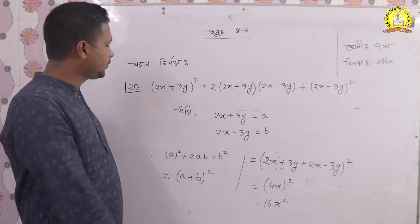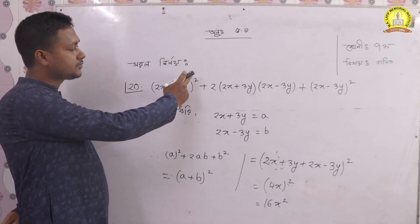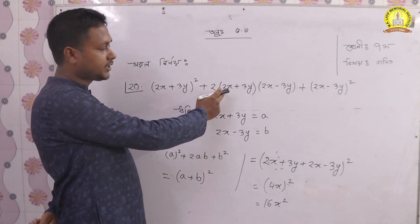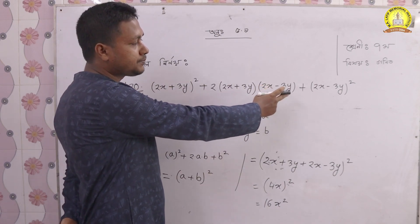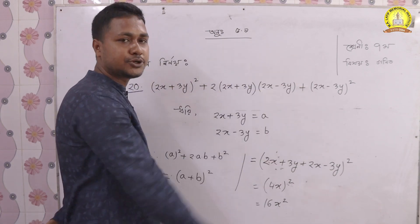We have to see that 2x plus 3y, 2x plus 3y, 2x minus 3y is equal to...